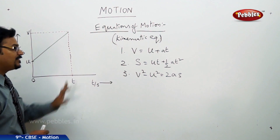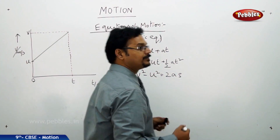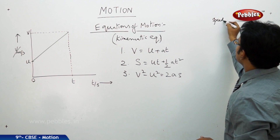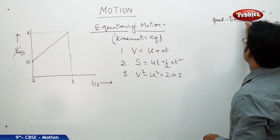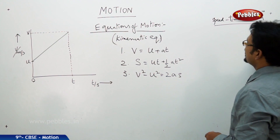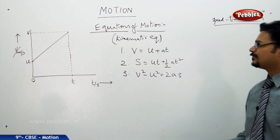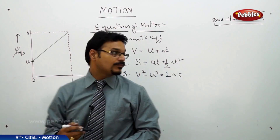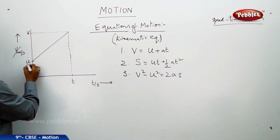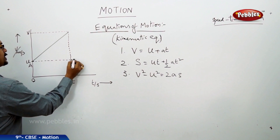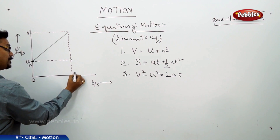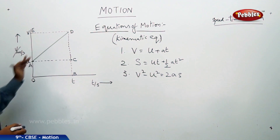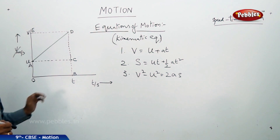Let me derive the first equation, v = u + at, which is called the speed-time relation or velocity-time relation. Looking at this graph, I'll label specific points: A, B, C, D, and E. The original graph line is A to D only; all remaining dotted lines are imaginary lines drawn to help us solve the equations.